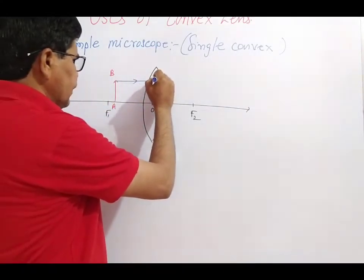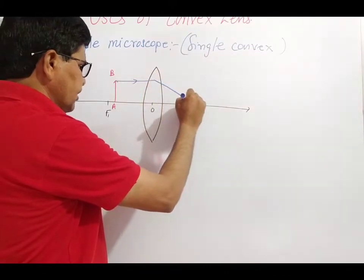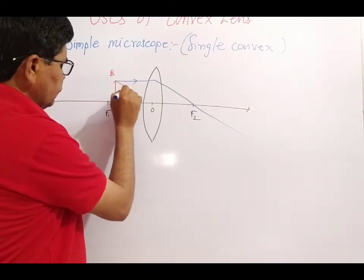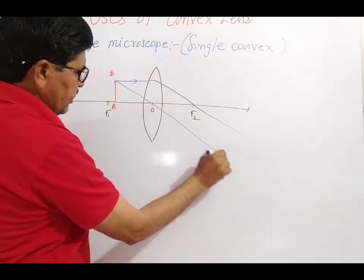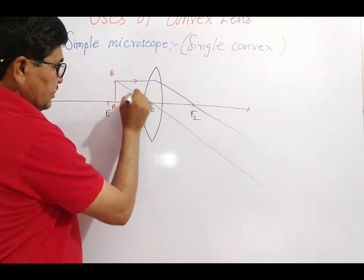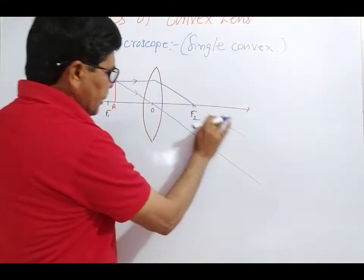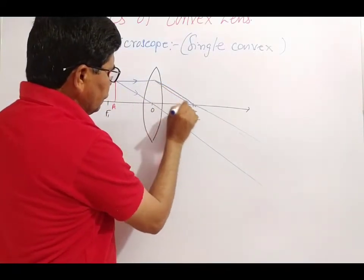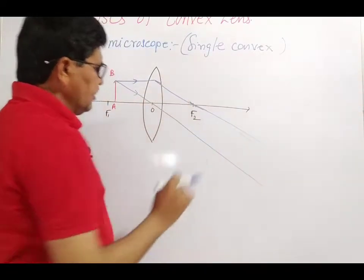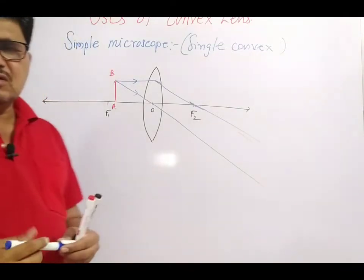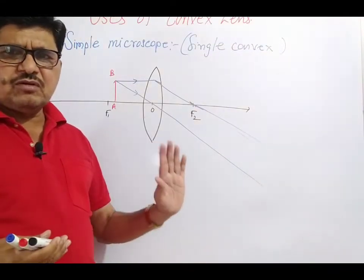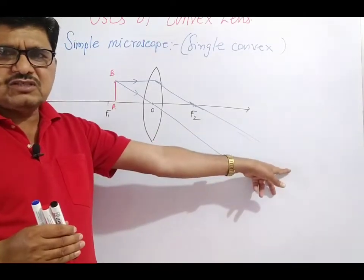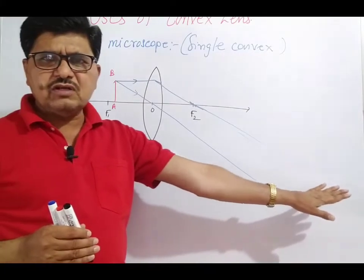The first ray is parallel to the principal axis, and we know that the ray which is parallel to the principal axis, after refraction, passes through the focus. The second ray passes through the optical center without any deviation. After refraction, the distance between the refracted rays goes on increasing, and where these rays meet together the image of that object is formed. But the distance between the refracted rays keeps increasing after refraction — there is no possibility of them meeting together anywhere.